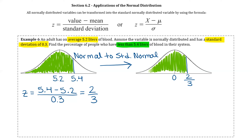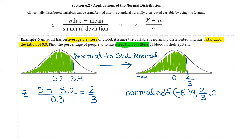We're still looking for the area to the left, and to find the area under the curve we use normal CDF with lower bound, upper bound, mu, and sigma. The lower bound is negative infinity, so we use negative E99. The upper bound is two-thirds. Since this is now a standard normal, mu is 0 and sigma is 1. Putting that into the calculator gives approximately 0.7475.